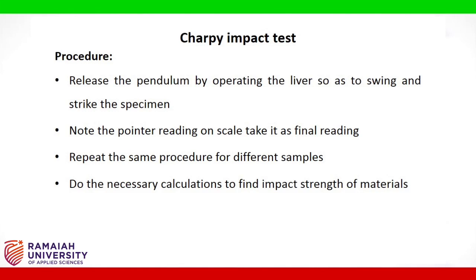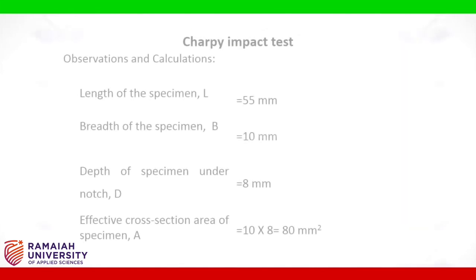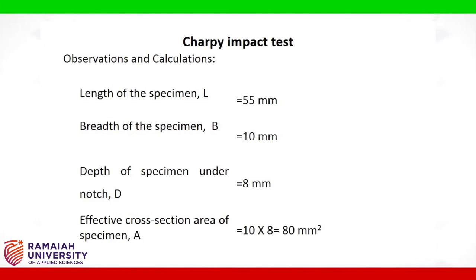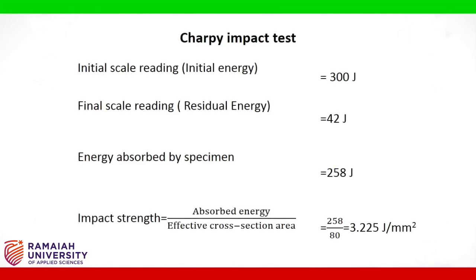Do the necessary calculations to find the impact strength of materials. Length of specimen L = 55 mm, breadth B = 10 mm, depth under notch D = 8 mm. Effective cross-sectional area A = 10 × 8 = 80 mm². Initial scale reading (initial energy) = 300 joules. Final scale reading (residual energy) = 42 joules. Energy absorbed by specimen = 258 joules. Impact strength = absorbed energy divided by effective cross-sectional area = 258 ÷ 80 = 3.225 joules per mm². Repeat the experiment for different materials to find their impact strength.